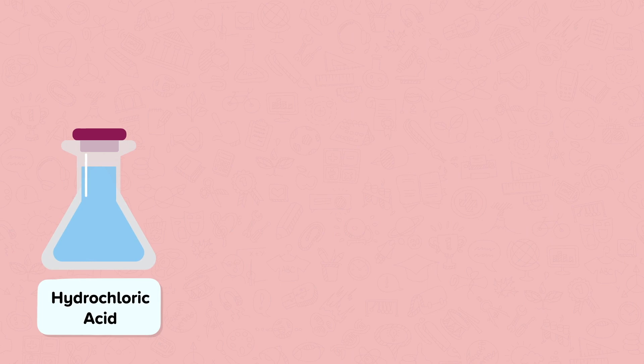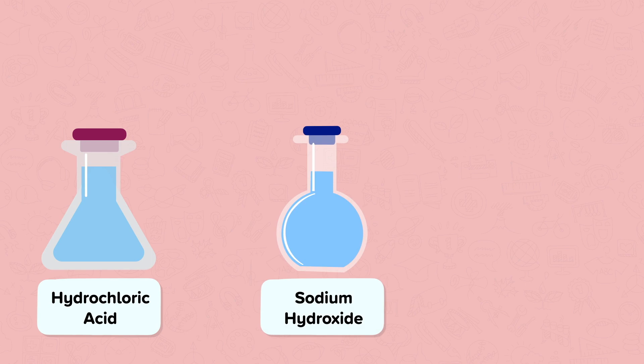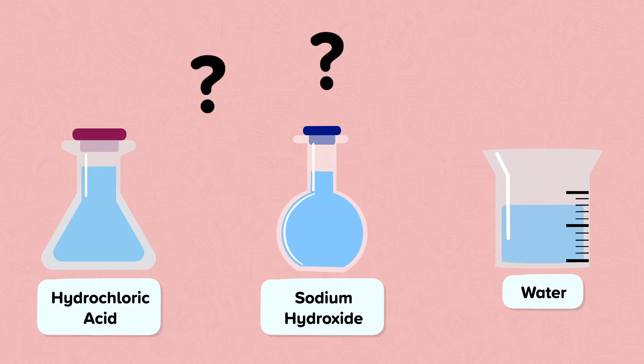When an acid is dissolved in water we get an acidic solution such as hydrochloric acid. When an alkali is dissolved in water we get an alkaline solution such as sodium hydroxide. If a solution is neither acidic nor alkaline it is neutral such as water. But how do we find out a solution's pH?